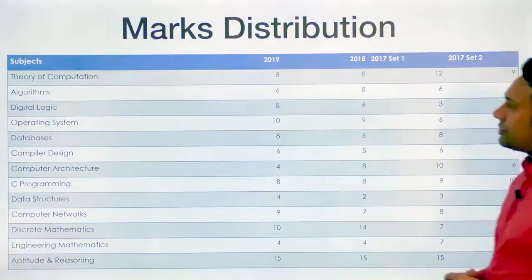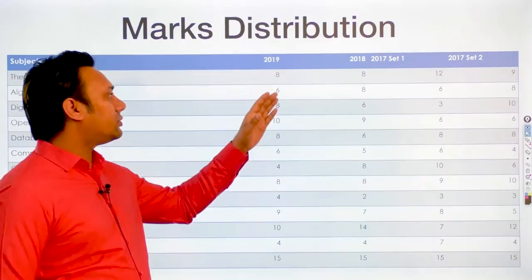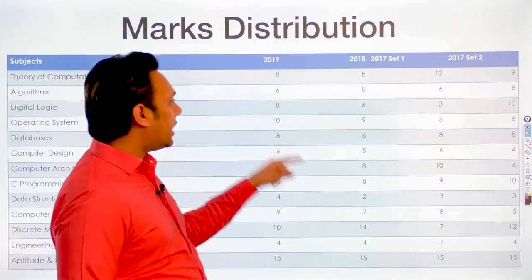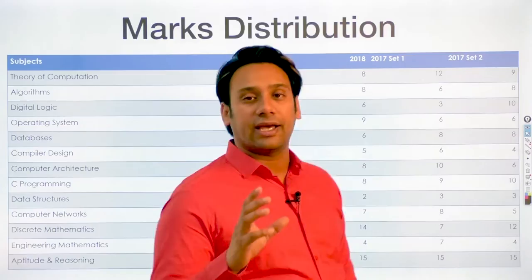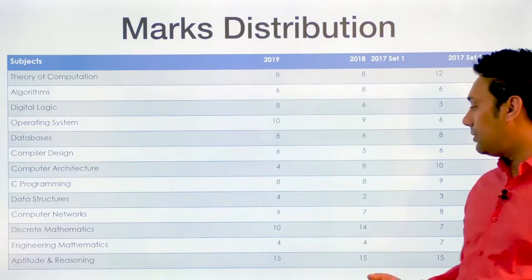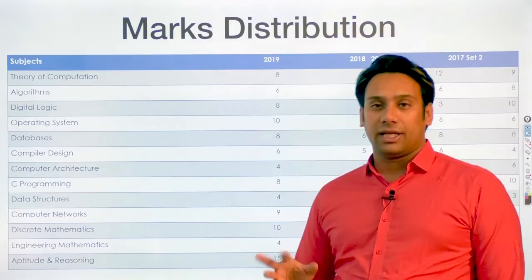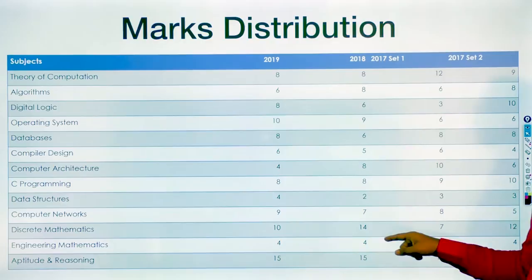This is the marks distribution from the last 3 years. We have analyzed the question papers from 2017, 2018, and 2019. So this is 2017 Set 2, this is 2017 Set 1, this is 2018 and this is 2019. You can clearly see that some subjects are extremely important. Together, discrete mathematics and engineering mathematics come for approximately 15 to 18 marks — here it is 14 marks, in 2018 it was 18 marks, and in 2017 it was approximately 14 marks.